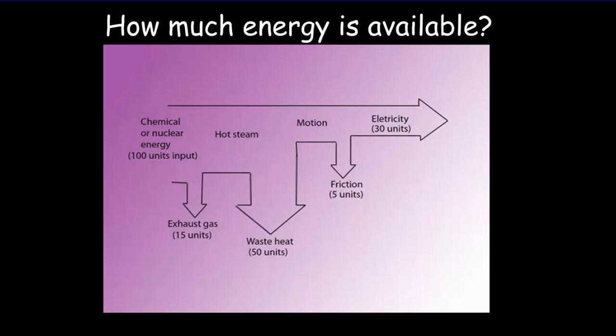So here's a Sankey diagram outlining the energy flows for a typical power plant. Here's your primary energy, or the energy stored within the fuel. Out of 100 units, about 30% of that would go into electricity. And that's our secondary energy source.